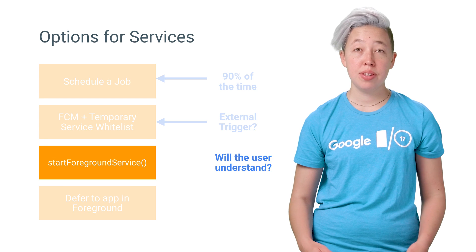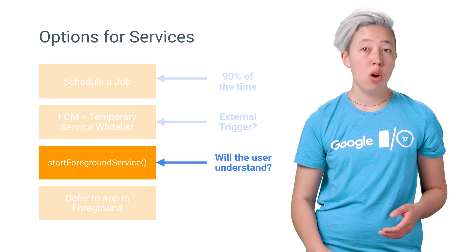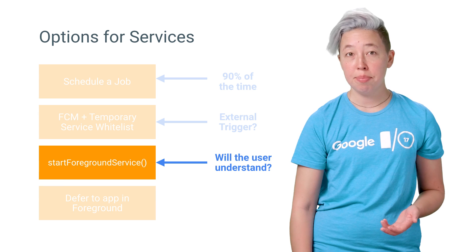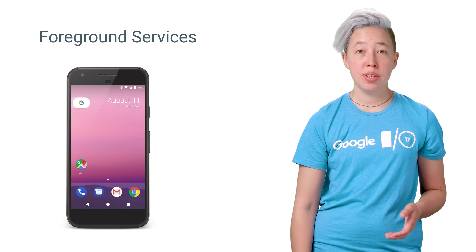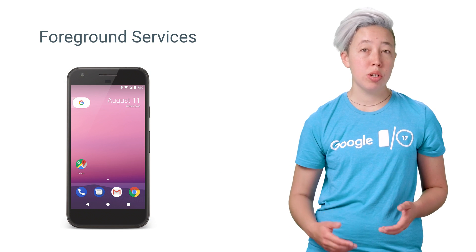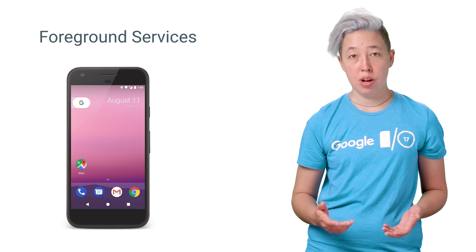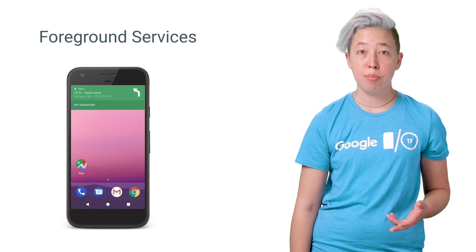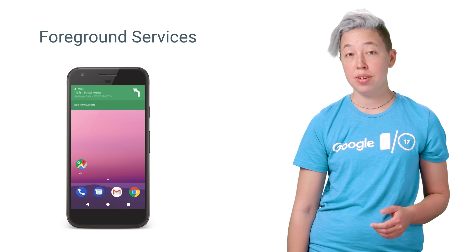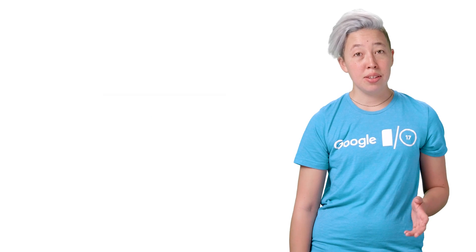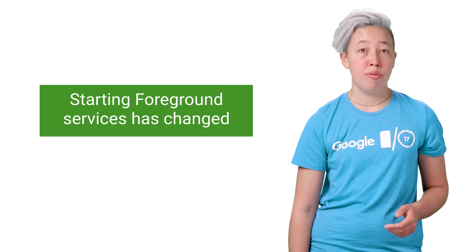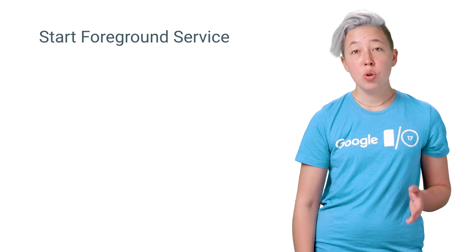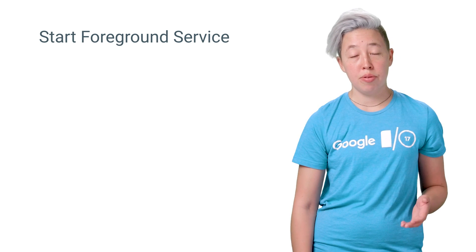If the service is something the user might interact with or want to monitor, you can make a foreground service instead. Foreground services have a persistent notification on screen which informs the user that they're actually running. Timers and navigation apps are common examples of apps that employ foreground services effectively. The thing is, the old way of starting a foreground service from the background will no longer work. Instead, switch to the new API to start a foreground service.